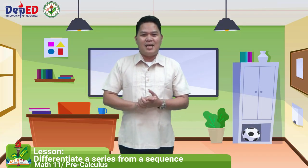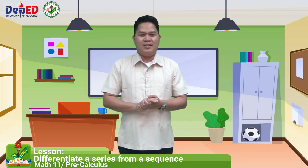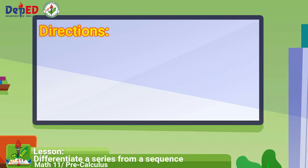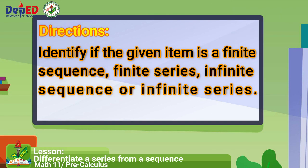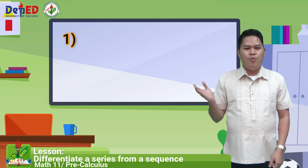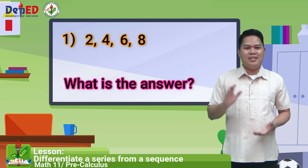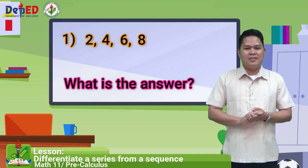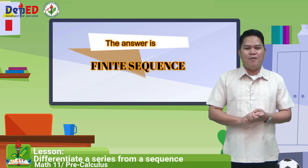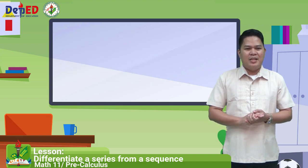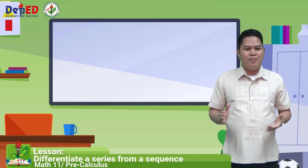Now, let's have independent practice activity. Directions: identify if the given item is a finite sequence, finite series, infinite sequence, or infinite series. Number one: two, four, six, eight. The answer is finite sequence.